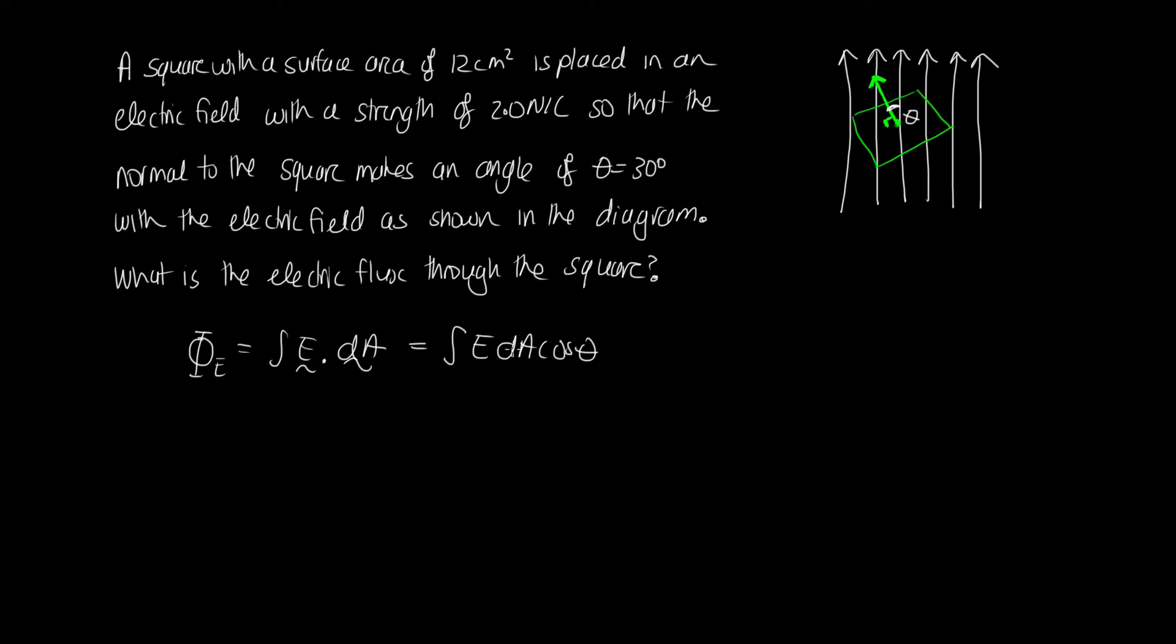So we'll want to integrate this over the area. The electric field is constant everywhere, we can pull the electric field out the front of the integral. And cos(θ) is also not changing, so it can also come out the front of the integral.